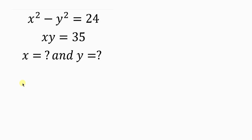Welcome back to my YouTube channel. Look at this nice and beautiful question on the board that we're going to be solving. The question says: find the value of x and y for which x squared minus y squared is equal to 24, and x times y is equal to 35.